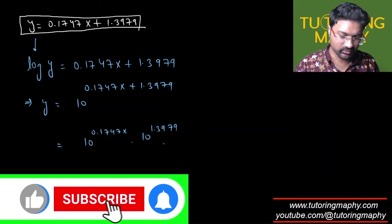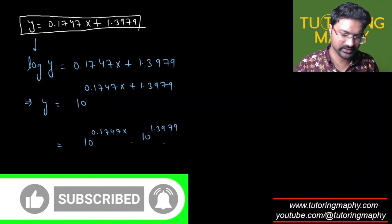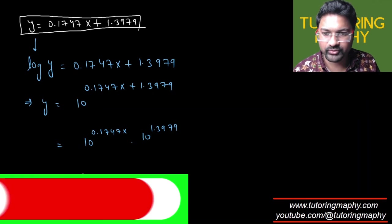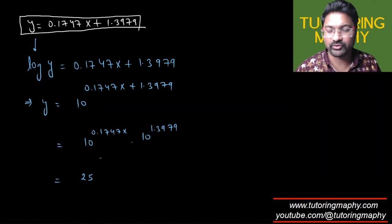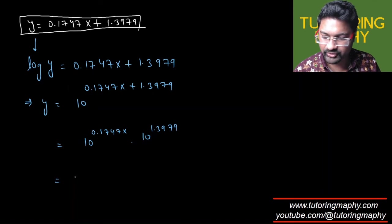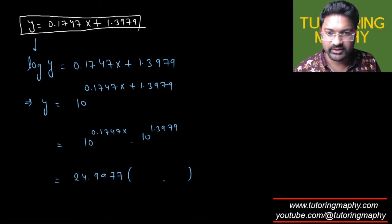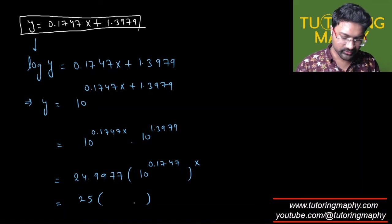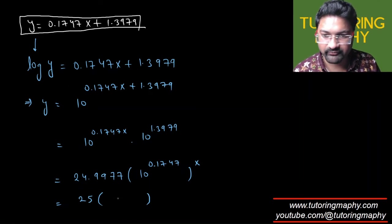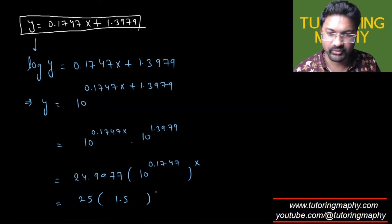So that's going to look something like this. This can be segregated as 10 raised to 0.1747x times 10 raised to 1.3979. And 10 raised to 1.3979, how will that turn out to be? 1.3979, that's about 25, about 25, which should be another case because that was also 25 if you remember. So that should be 24.9977. That's what I'm getting as this. And what is 10 raised to? Because a 10 raised to this thing can also be written as 10 raised to 0.1747 raised to x.